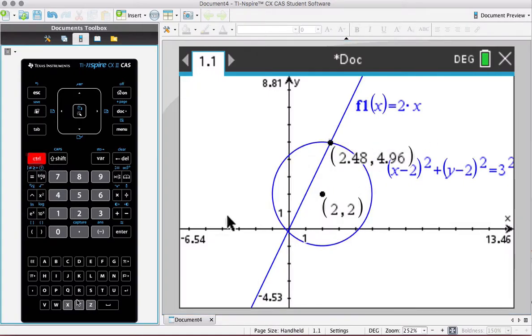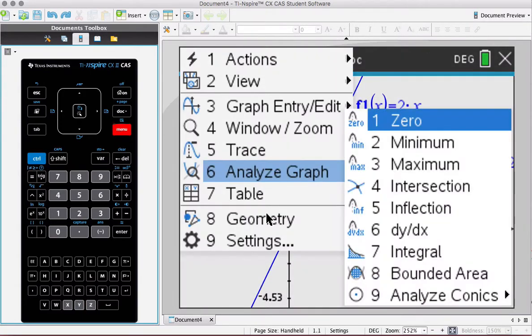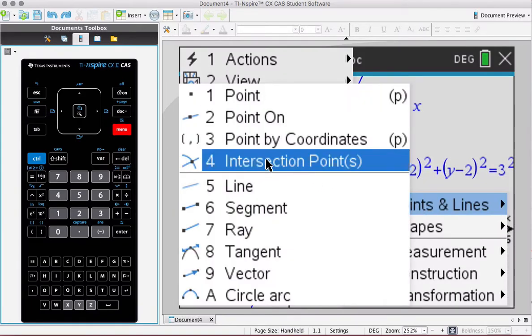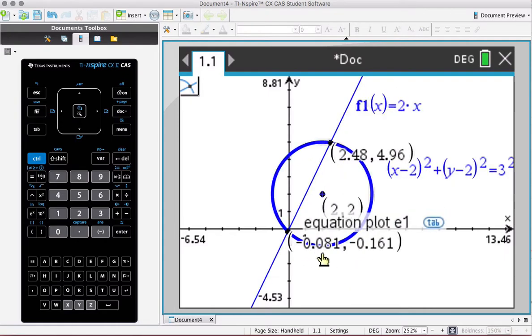But let me go ctrl z to undo that. Another way you could do it is go geometry, points and lines and go intersection points. You click on this, then you might just have to click on this line and then I click on this line, click on my two things that I want to find the intersection points and I just find them immediately.